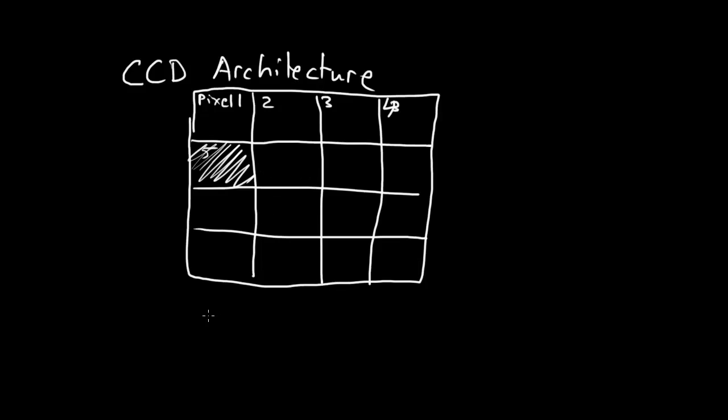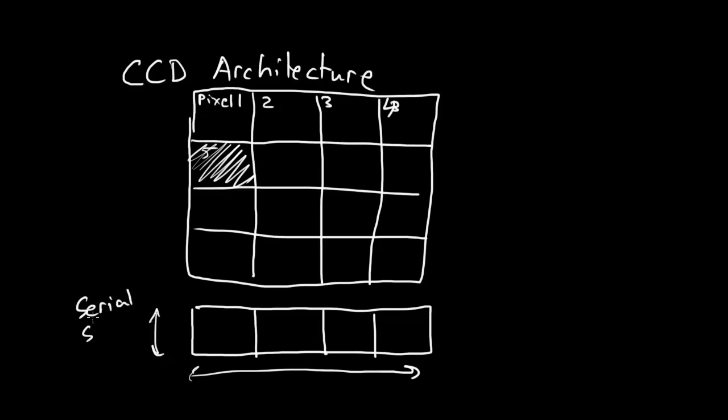Then below this array, I have what's known as a serial shift register or a shift register, and that has the same number of pixels, but it just has one in this direction, just one pixel in this direction and lots of pixels in this direction. That's a serial shift register. That's this whole thing.